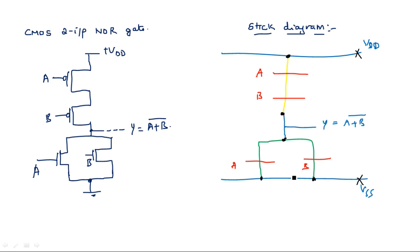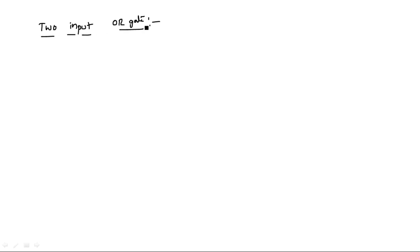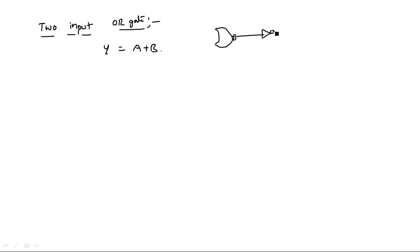Suppose you are asked to draw the stick diagram for a two-input OR gate. A two-input OR gate gives Y is equal to A plus B. By default, the CMOS circuit gives a complemented output, so we cannot stop the complement at the initial stage. That's why we have to use an inverter at the output of the NOR gate, so that the output of the NOR gate passing through the inverter gives the OR operation: A plus B bar passed through an inverter gives A plus B.